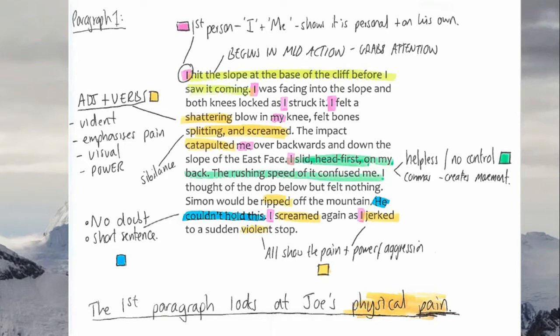Then he says: 'I slid, head first, on my back.' The commas create movement and make the piece feel quicker. The rushing speed confused him — this shows Joe is helpless and has no control. It also shows that what is happening must be quite unique, even for an experienced climber — if it's confusing him, it must be really bad. Simon would be 'ripped' off the mountain — a violent verb. 'He couldn't hold this' is a short sentence showing no doubt they're both in danger. Then 'I screamed again as I jerked to a sudden violent stop' — the adjective violent again connotes pain, power, and aggression.